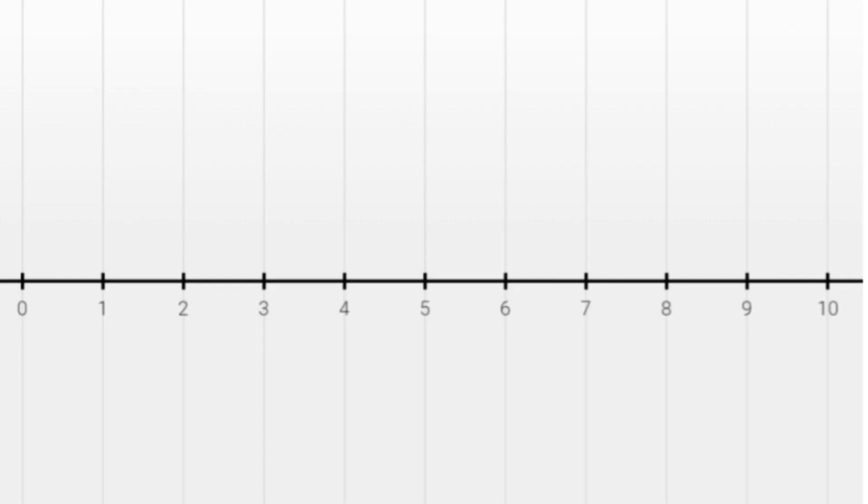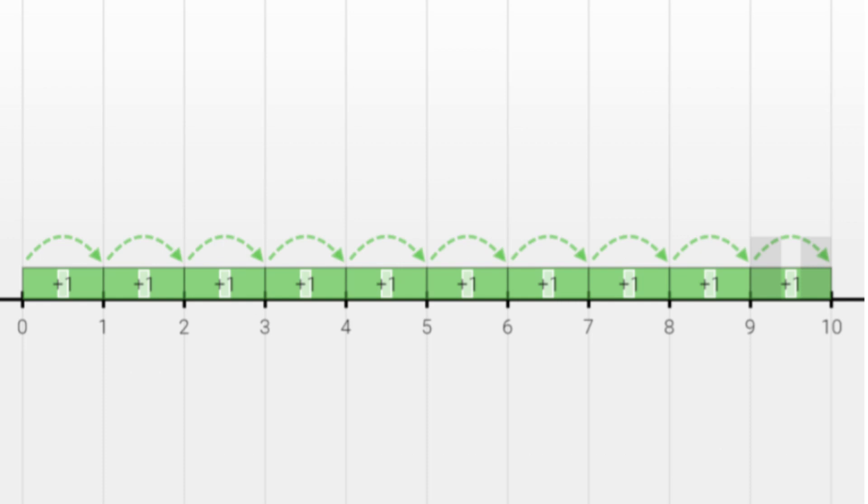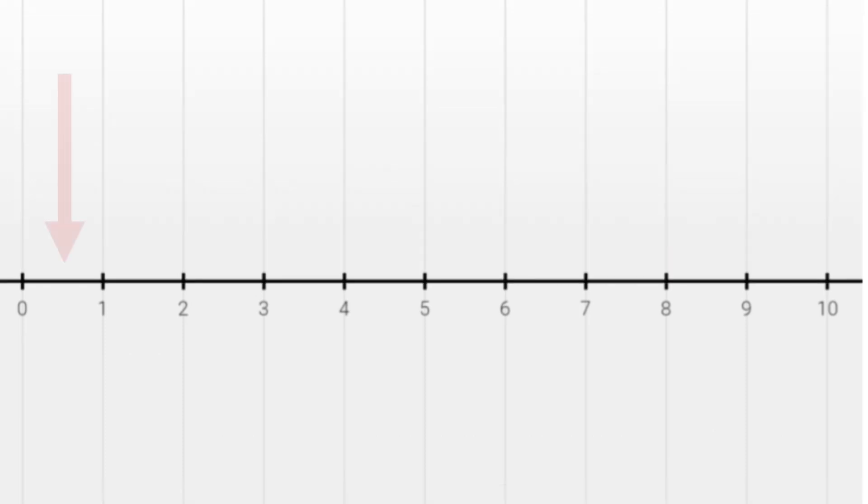Normally when we use a number line we're looking at increments that go up by one whole at a time. However, when we're looking at fractions we want to look at the spaces between those increments. So the number line we're using today goes from zero to one whole.